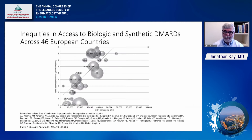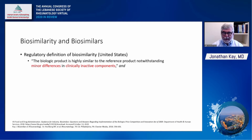There are inequities in access to biologic and synthetic DMARDs in Europe. A paper by Paulina Putrick published in Annals of Rheumatic Diseases shows that access to these agents is directly proportional to gross domestic product per capita, with countries such as Georgia, Albania, and Russia having lower access, and countries such as Norway, the Netherlands, and the United Kingdom having much more access. Because of this difficulty in affording biopharmaceuticals, biosimilars have been developed.